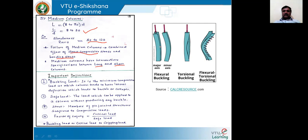On the right side diagram, you can see flexural or buckling along the major axis and along the minor axis, and torsional buckling, along with a combination of flexural and torsional buckling. These are the classifications of columns used in various applications. Now we will study some important definitions related to columns. The very important term is buckling load, also called critical load or crippling load.